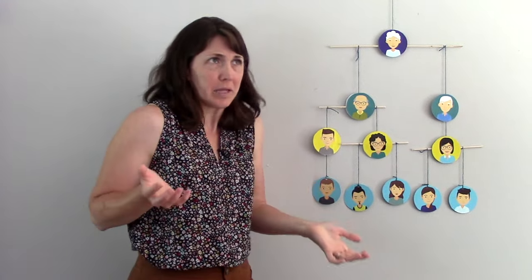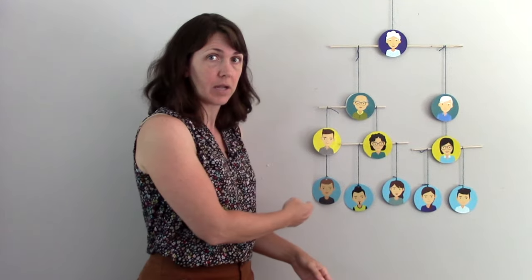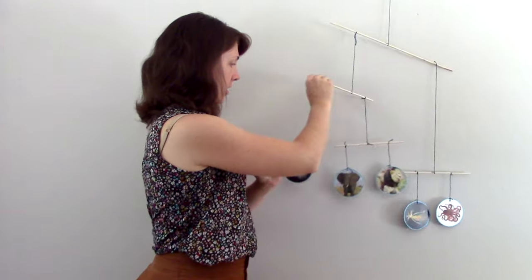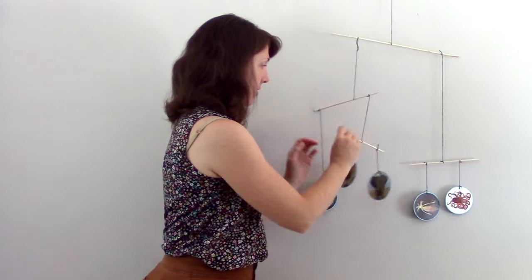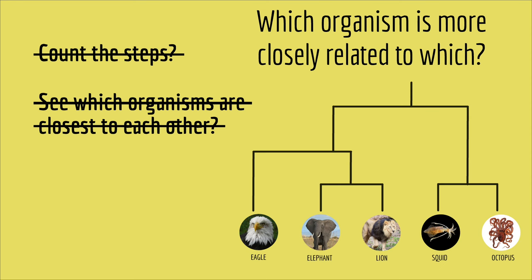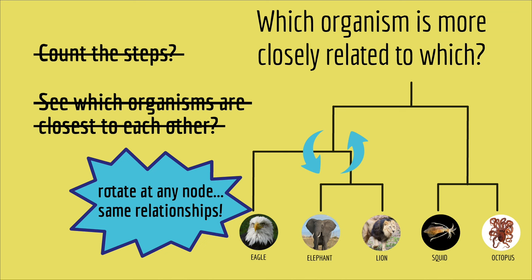But I haven't actually gotten more closely related to my second cousin, Megan, right? I'm still more closely related to my cousin, Michael. I've just changed the way the tree looks. This is true for any evolutionary tree. In this tree, eagles are closer to squid than they are to elephants. But if I rotate around this node here, now eagles are closer to elephants, and they're really far away from squid. But I haven't actually changed the relationships between the animals. I've just changed the way the tree looks. In fact, I can rotate around any node, and it will change the way the tree looks, but it doesn't change the relationships between the organisms on the tree. So, don't use which organisms are closest to each other on the tips of the tree, because the tree can rotate around any node without changing the relationships.